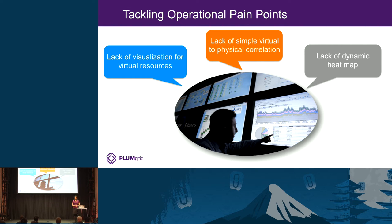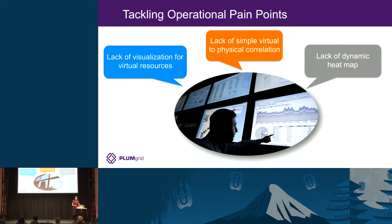On top of that, many troubleshooting exercises require some form of correlation between the virtual layer and the physical layer. The most common request I hear from customers is 'my two VMs cannot ping.' Even this simple troubleshooting exercise means going from a VM to the server, mapping it to the virtual network, mapping it to the physical network, and traversing all these layers back and forth. The second need is virtual-to-physical correlation. The third is the lack of real-time information — heat maps, real-time health status.